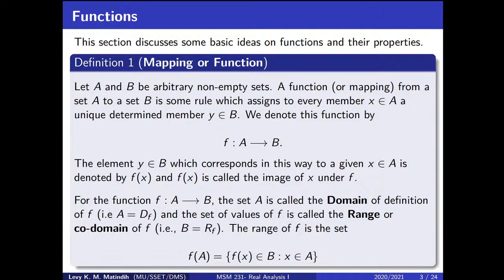The element Y which belongs to set B, corresponding to a given X in set A, is denoted by F of X. This F of X is called the image of X under F. If the function F maps set A onto set B, then set A is called the domain, and set B is called the range of the function. The range of the function is denoted by F of A, which equals the set of all elements F of X belonging to B, found by acting the function on an element X in A.